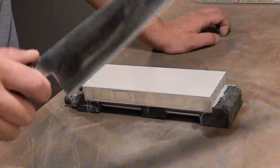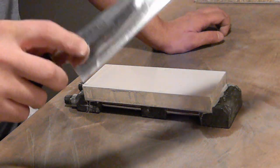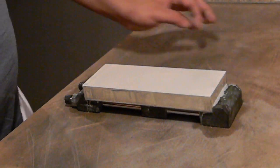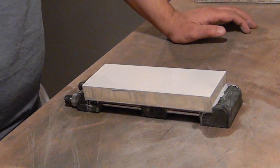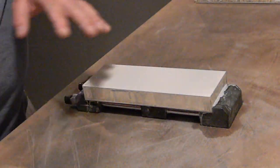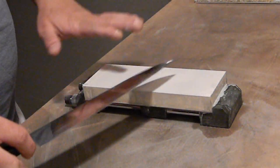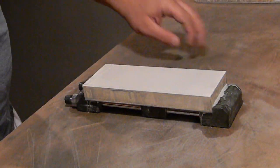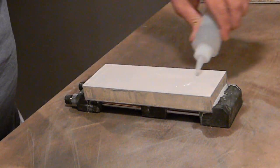So I'm back with the Sakai Takayuki Grand Chef 240 millimeter. This time I went with the Bester 1200. I think the white will give you a good contrast for the knife and allow you to see what I'm doing here. So without further ado...